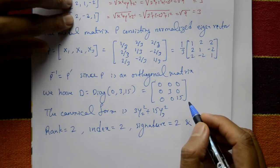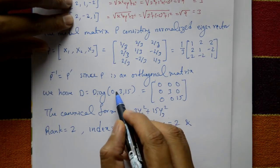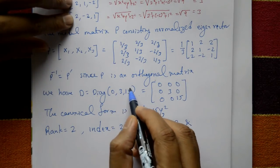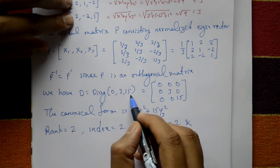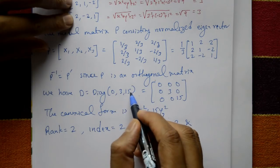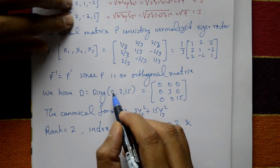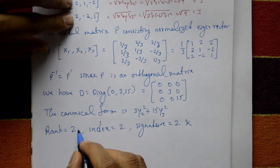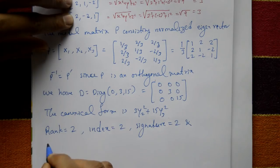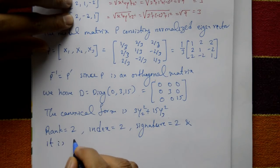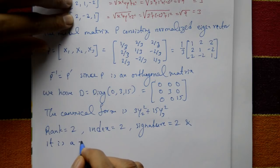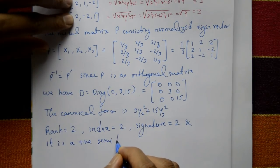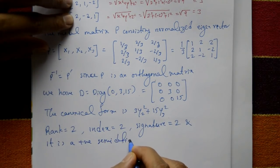Nature of the quadratic form: all eigenvalues are positive or zero, and at least one eigenvalue is zero. Therefore, the nature of the quadratic form is positive semi-definite.